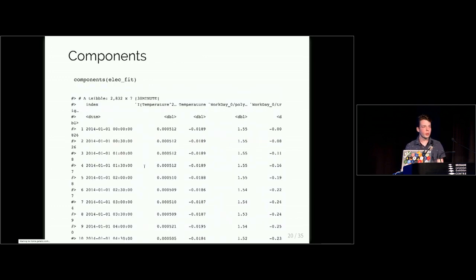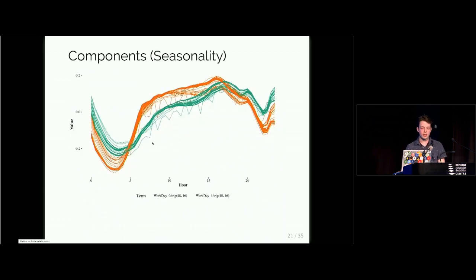What can we do with this model? Well we can extract the components. This is something special to state space models and it's something you can do with prophet as well. It allows you to look at how the model is behaving and generate new insights from the features that it's captured. So one example of this is visualizing seasonality.